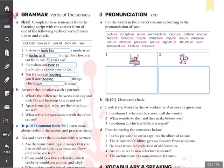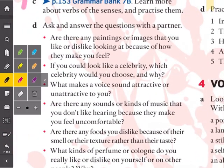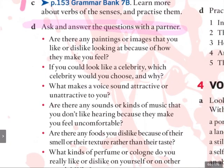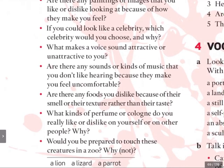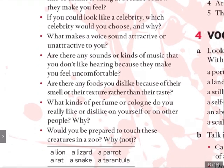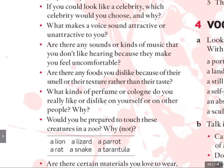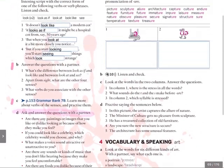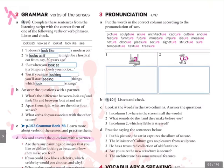Now let's go back to page 69 because I'm going to tell you my dream — for us to do exercise D. Ask and answer the questions with a partner as a speaking exercise in our WhatsApp group. If you're brave enough to record yourself, make my dream come true. Questions include: paintings you like or dislike looking at; which celebrity you'd like to look like; what makes a voice sound attractive; sounds or music that make you uncomfortable; foods you like for smell or texture; favourite perfumes or colognes; touching animals in a zoo; and materials you love or hate wearing. That's all for today — bye bye, see you soon.